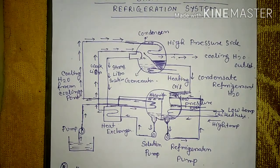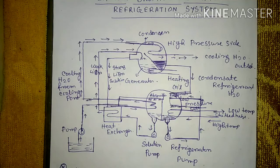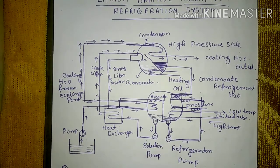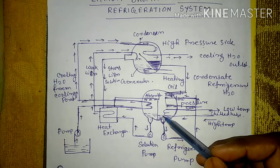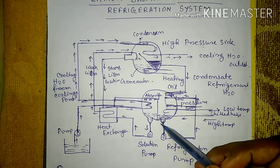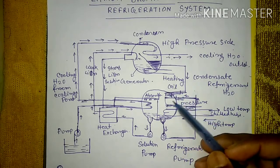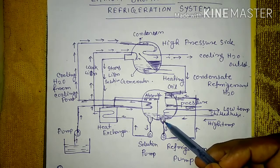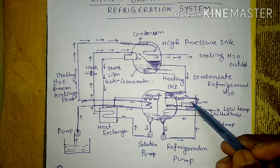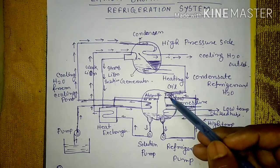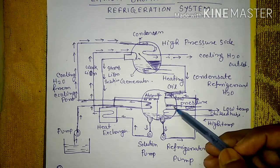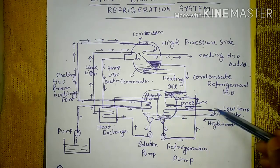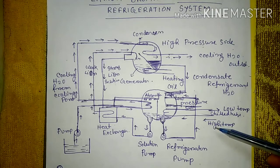Now, the working principle: water acts as the refrigerant in the evaporator. The water refrigerant is pumped via a refrigerant pump to a spray header, where it is sprayed through spray nozzles onto the chilled water tube. High-temperature water enters the chilled water tube and exits as low-temperature chilled water.